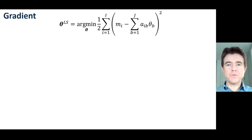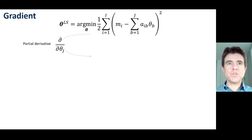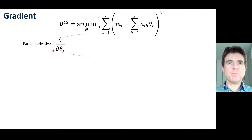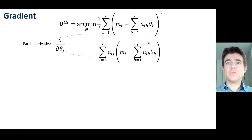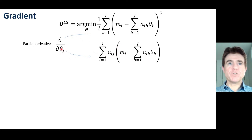To find the theta that minimises the least squares objective function (or cost function or loss function), we need to find the gradient — specifically the gradient with respect to a single element of the vector theta, which in an imaging context could be a single pixel value. We take the partial derivative of this expression with respect to a single element theta j. Applying basic differentiation, we take the 2 down to the front, which cancels with the half, and then multiply by the derivative of the expression using the chain rule.